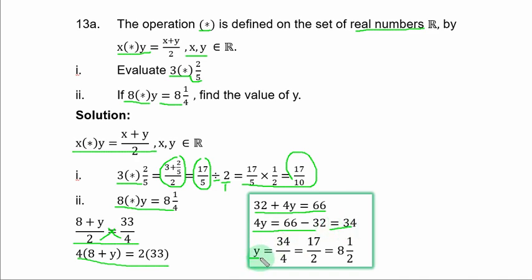To get y, divide both sides by 4, so y is equal to 34 over 4, which reduces to 17 over 2. And as a mixed fraction, you have 8 and 1 over 2.